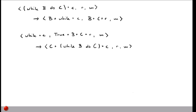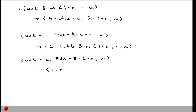In the true case, we have while on the control stack and true on top of the result stack followed by B and C. We execute the loop body C and then put another while B do C command on the control stack — taking us back to the beginning of the loop. In the false case, if B evaluates to false, we simply skip the loop: continue with whatever is left on the control stack, discard false, B, and C from the result stack, and leave memory unchanged.